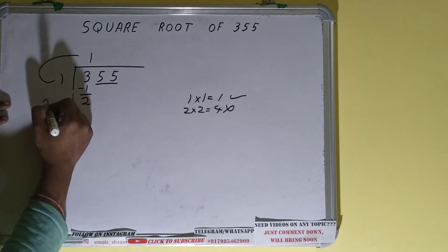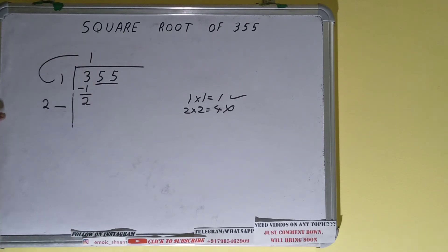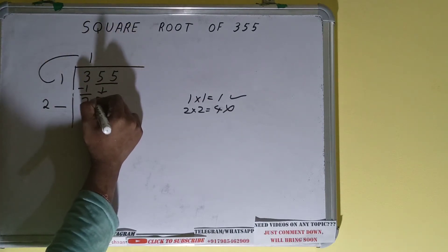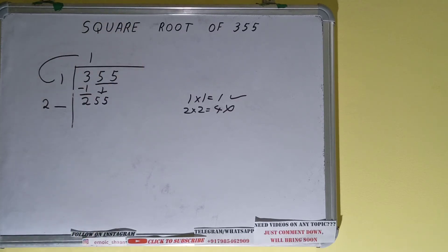Now we did 1 into 1, right? So do 1 plus 1, it will be 2. Write it over here and keep one digit extra and this number we need to make it big so that we can divide. So bring the next pair down to make the number big and it will become as 255.